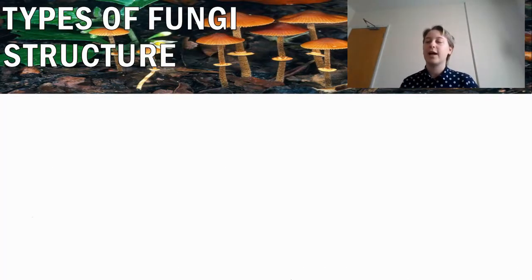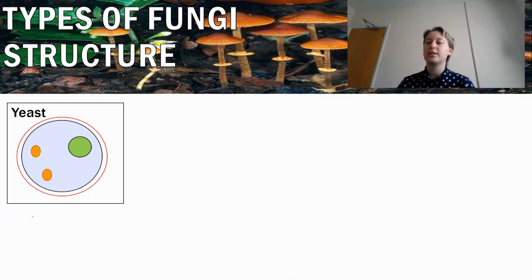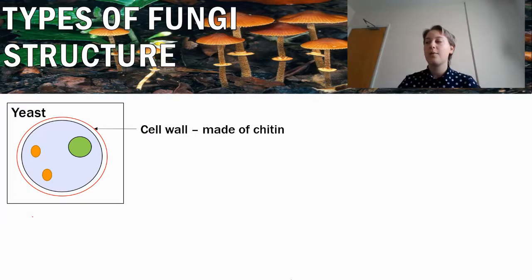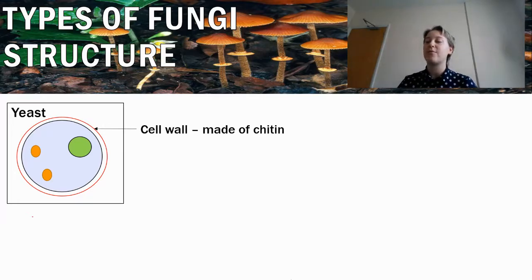Now we're going to look at the different types of fungi structure. Starting with the yeast cell, which we saw an example of with baker's yeast, there are a couple of new parts to look at. We've got a cell wall, which is made of a chemical called chitin. This makes the cell super strong and protects it — it's another layer around the cell membrane that reinforces the strength of the cell.